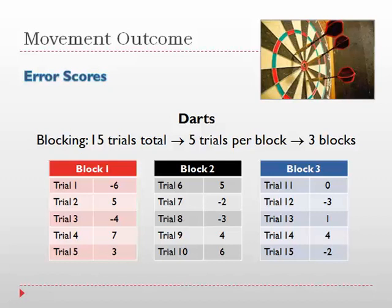One way that we can evaluate error scores is by doing something to the data that's called blocking. For example, let's say we had 15 trials of dart throwing. Instead of evaluating all 15 trials combined, we can separate them into three blocks. Trial 1 through 5 comprise block 1, 6 through 10 is block 2, and 11 through 15 is block 3. There's five trials per block, and there are three blocks total. By doing this, we can individually evaluate each of these blocks and perhaps make comparisons over time with progress or improvement.